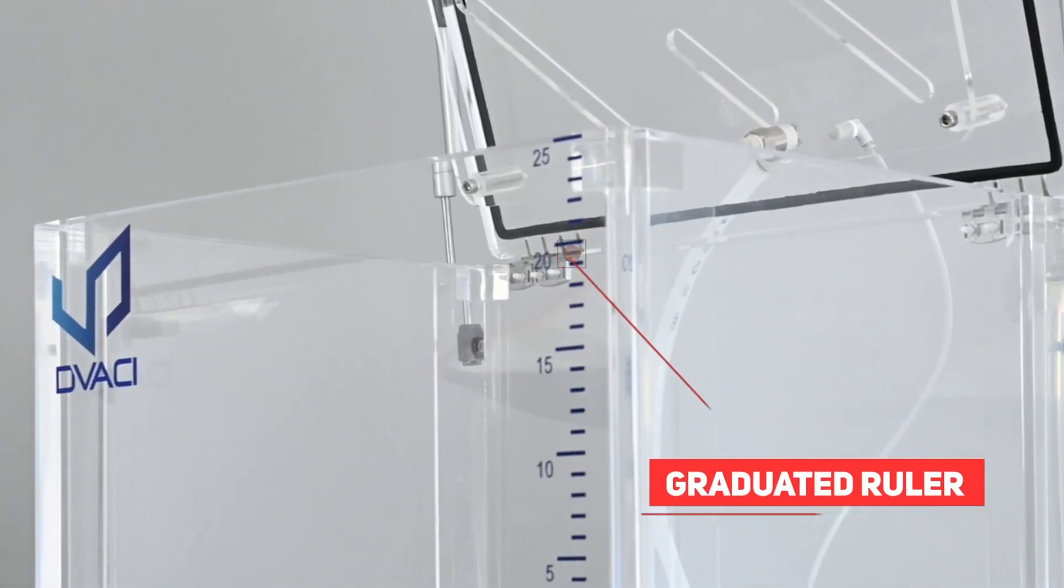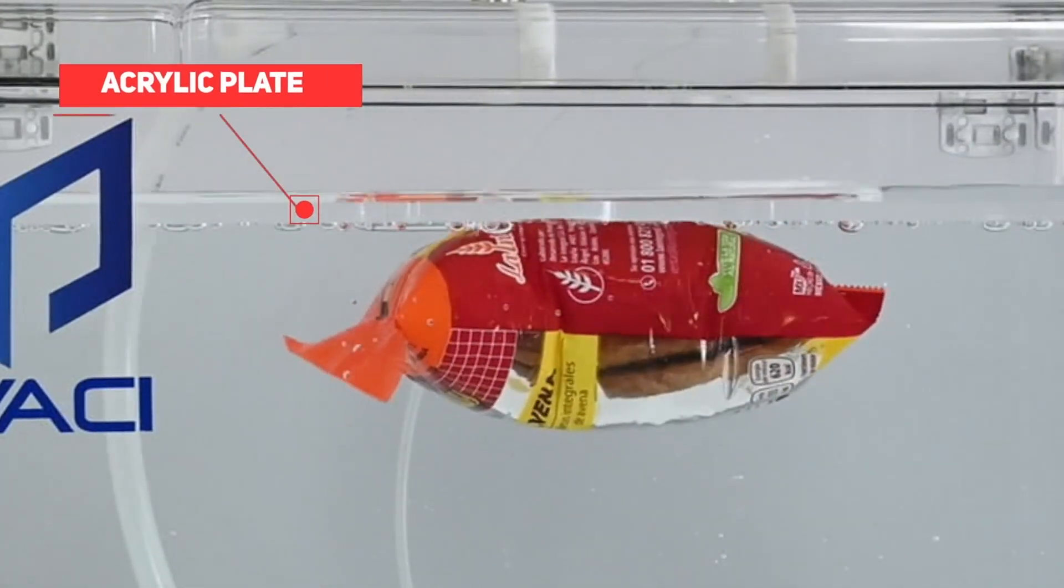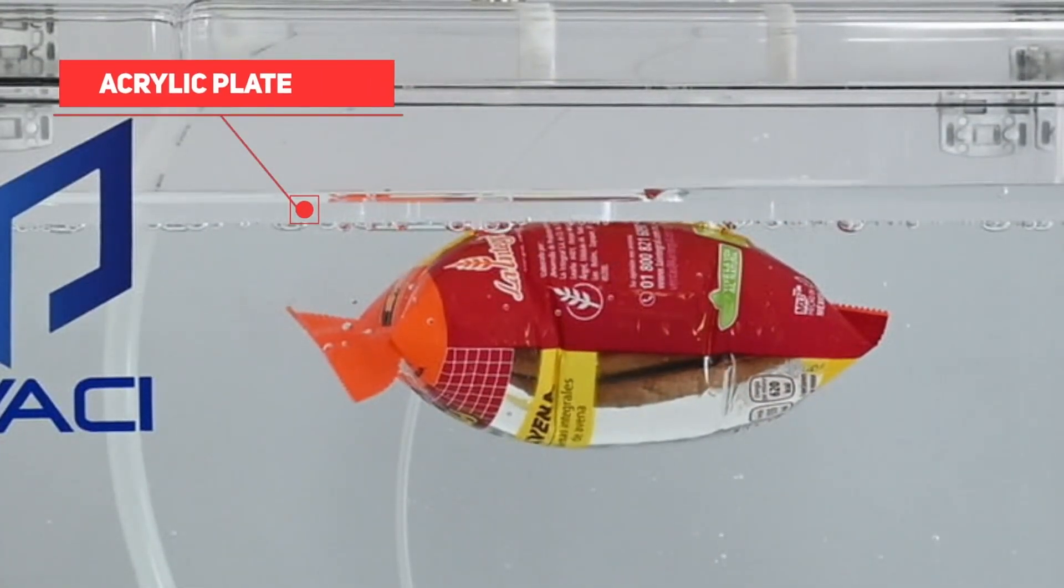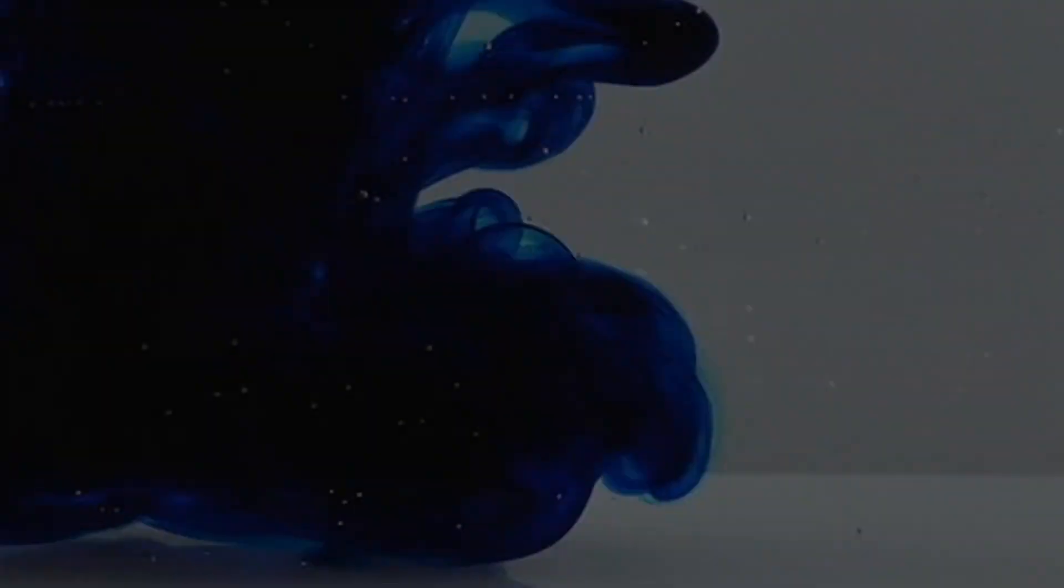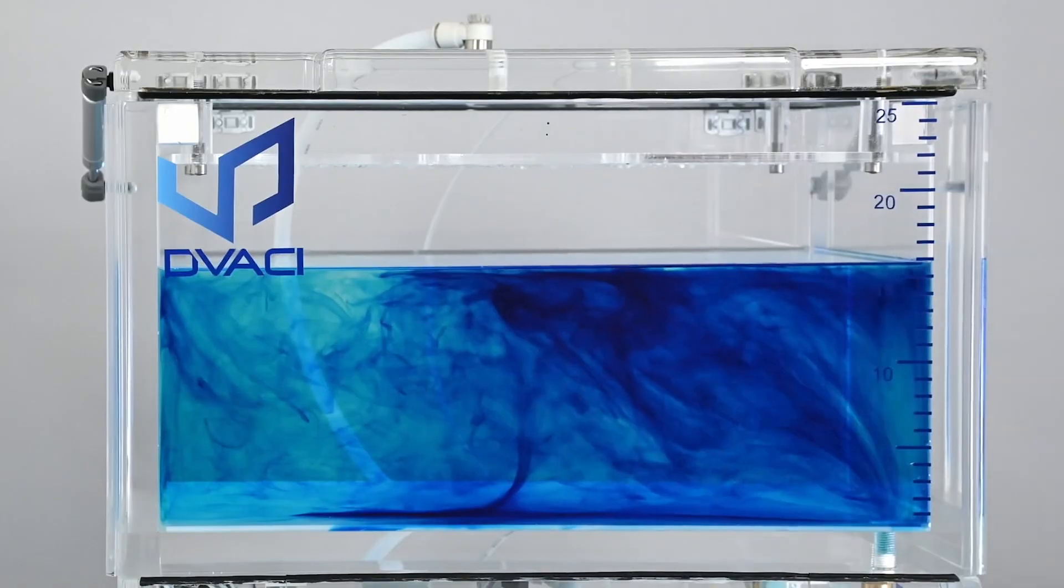A ruler graduated in centimeters helps determine the level of liquid during immersion testing. The inner grid keeps the packaging under water. Its draining system enables purging liquid from the vacuum chamber, avoiding splashing and staining the operator.